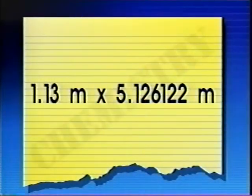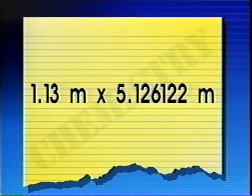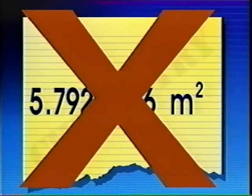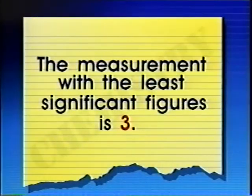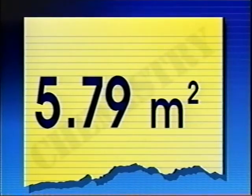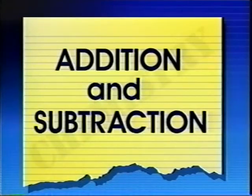Look at this calculation. The first number has only three significant figures. The second number being multiplied has seven. Following our rule, we may not use this answer which has seven significant figures. The measurement with the least number of significant figures is three, as in 1.13. So the product should be reported as 5.79 m², which also has three significant figures.